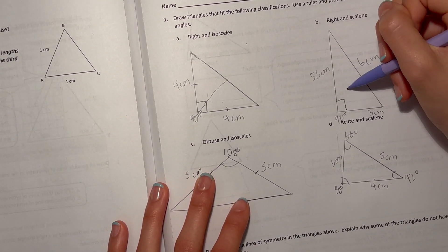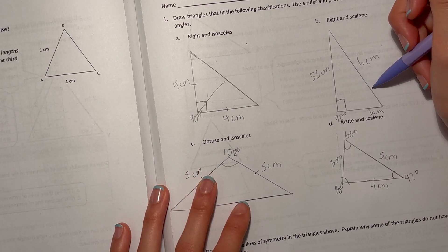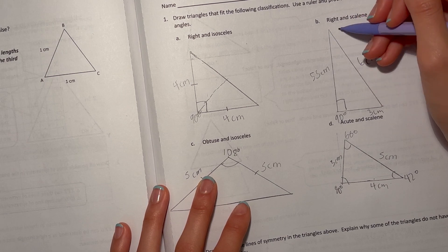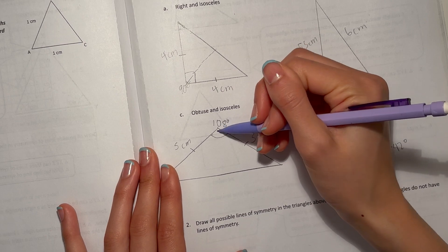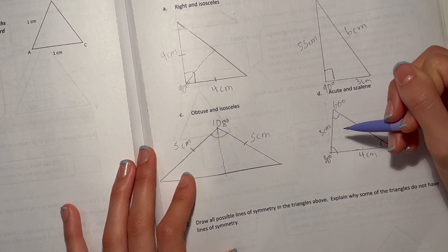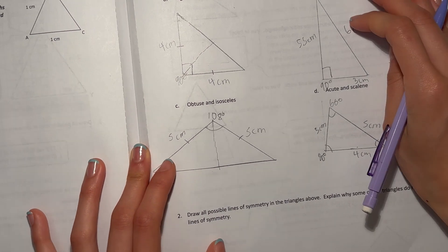This one, right and scalene. Well, since it's scalene, you can't really do anything to make it symmetry. This one, isosceles, you can make it in half. And scalene, we can't do anything because they're different.